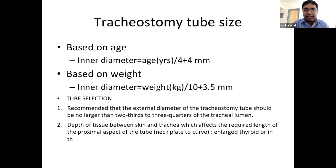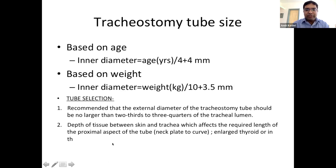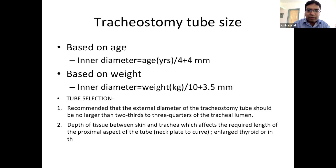In practice, size 6.5 or 7 tubes are used for females, and size 7, 7.5, or occasionally 8 for males depending on the patient. The index finger of the patient can also guide tube sizing. The depth of tissue between skin and trachea affects the required length. If the tube is too short, it will not reach the tracheal lumen adequately and there is a high chance of dislodgement.